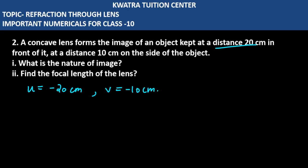What is the nature of the image? Let's look at u and v - both are negative and on the same side, which means it is a virtual image.